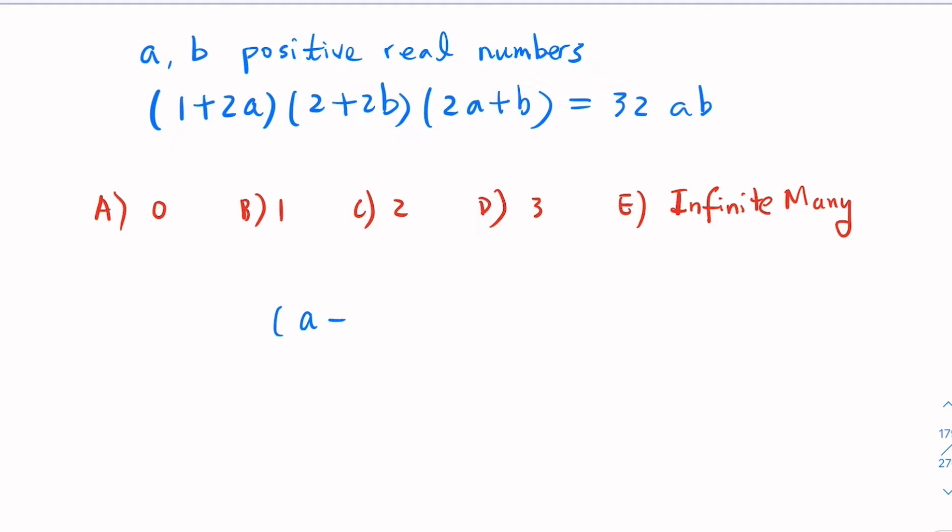For example, if I tell you (A - B)² + A² = -5, for real numbers, the sum of squares is greater than or equal to 0. That's impossible. How do we go about this problem?